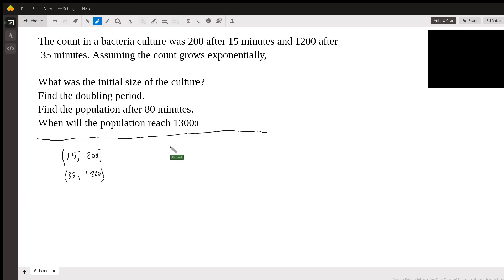So we're going to use these two data points to figure out what the equation looks like for this situation. So the general equation is Y equals AB to the T. We're usually talking about time here. So we'd say 200 equals AB to the 15. And we can say that 1,200 equals AB to the 35.